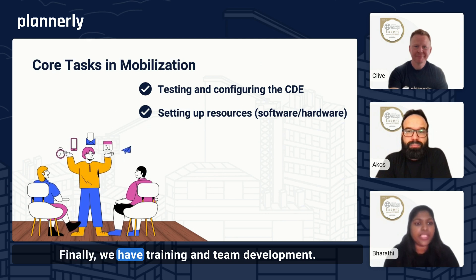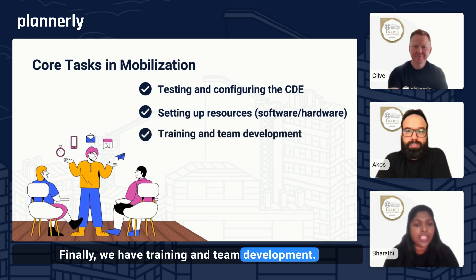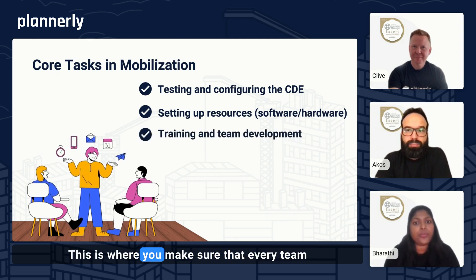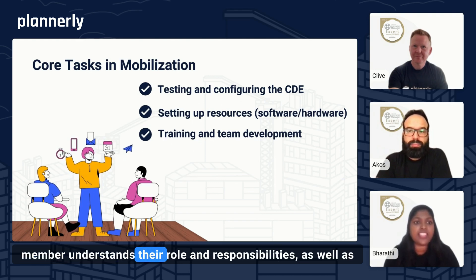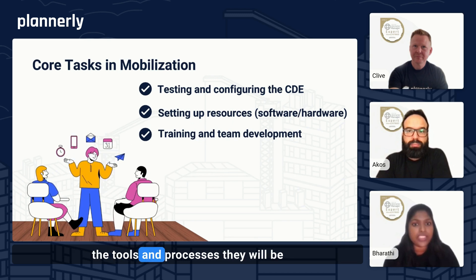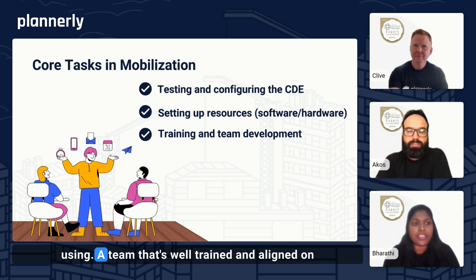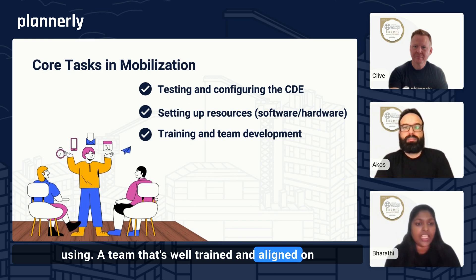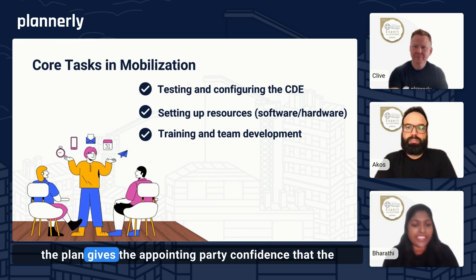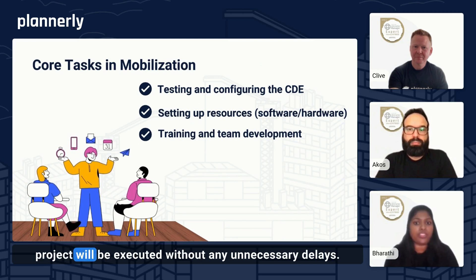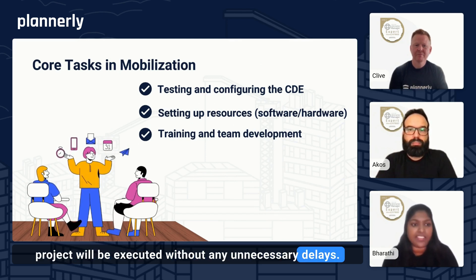Finally, we have training and team development. This is where you make sure that every team member understands their role and responsibilities, as well as the tools and processes they will be using. A team that's well-trained and aligned on the plan gives the appointing party confidence that the project will be executed without any unnecessary delays.